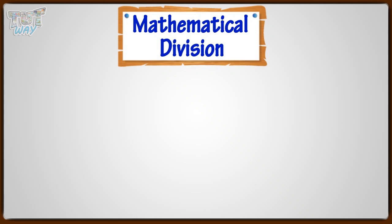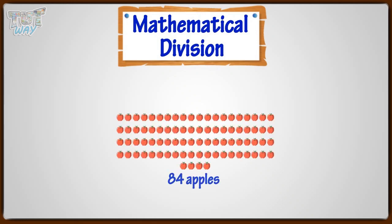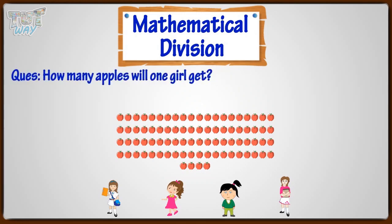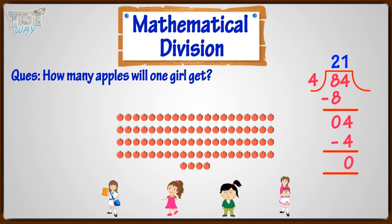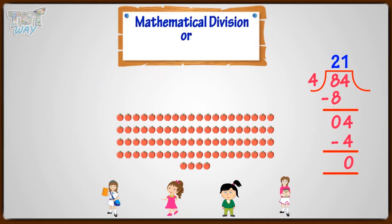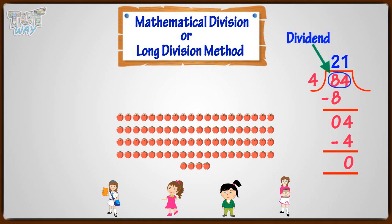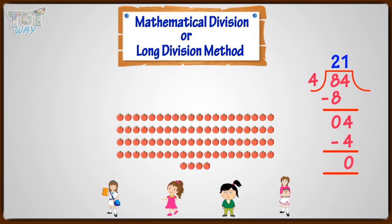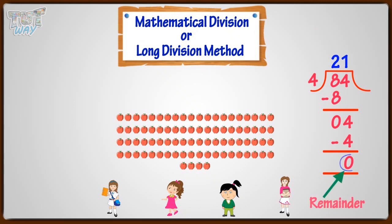There are 84 apples. If we distribute them among four girls, how many apples will one girl get? So we have to divide 84 by 4. Here we will learn mathematical division, or the long division method. The number that we have to divide is the dividend. The number with which we are dividing is the divisor. The answer that we will get will be our quotient. And if any number is left after the division, that is called remainder.